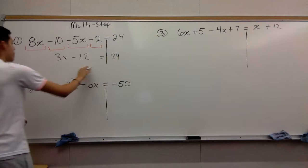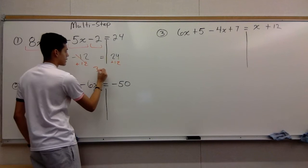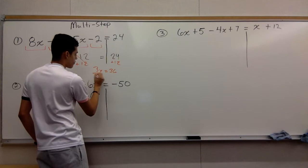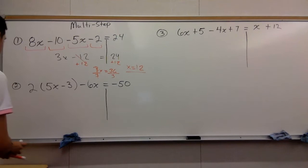Now you have a two-step equation. Move the 12 to the other side. You add 12, that disappears. Add 12 to this side. Rewrite the problem: 3x equals 36. Divide by 3 on both sides. That disappears. You divide by 3 here. X equals 12. That is your answer.